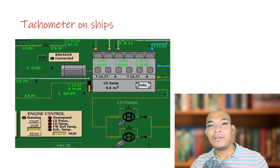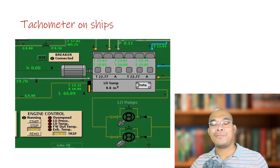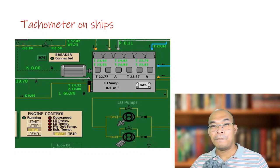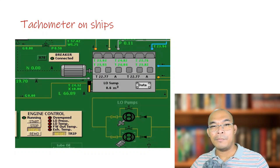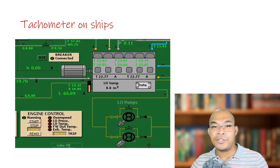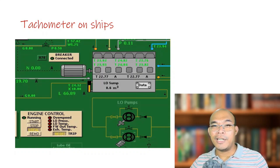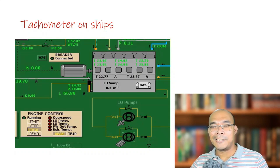This figure here shows the diesel generator in our engine room simulator. The 'N' in this diagram indicates the speed of our alternator or AC generator. At this moment, the speed measured is zero RPM — revolutions per minute — which means our generator is currently not operational. Let us start this generator and observe the changes of N, or the speed.